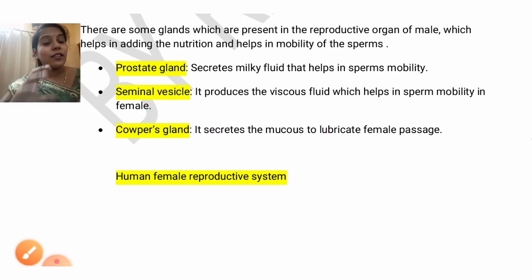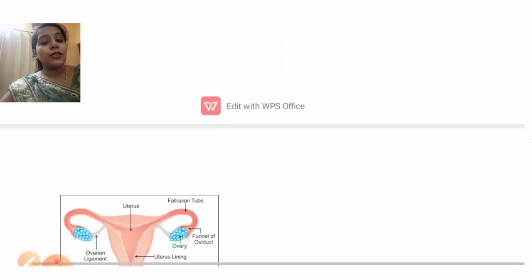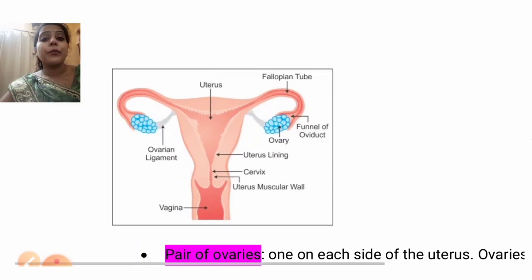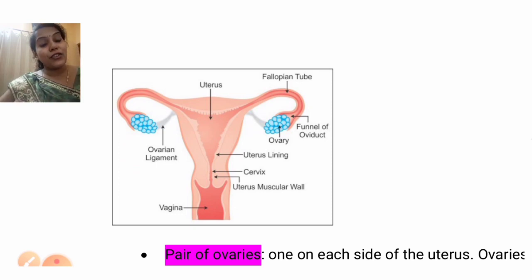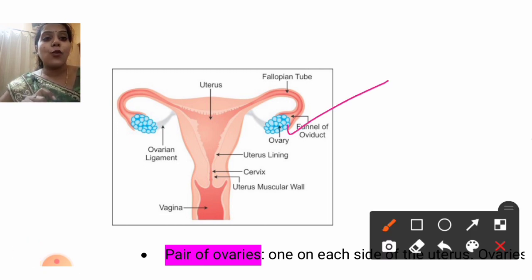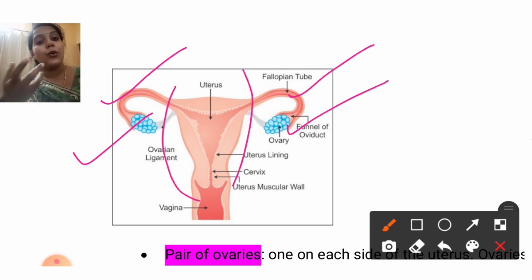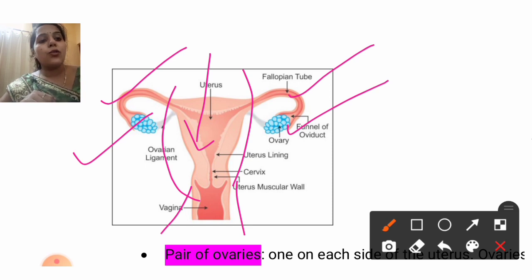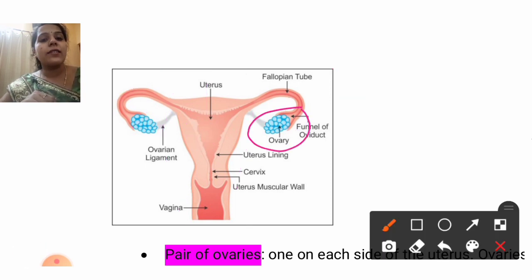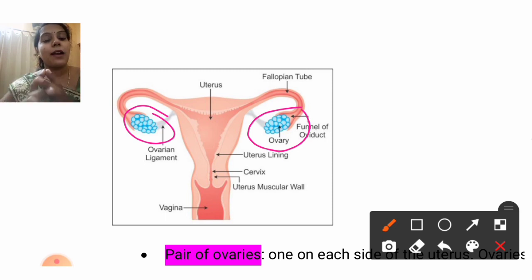I hope you have understood all the functions. Next, coming to the human female reproductive system — it is also very important. Parts and functions you should know. You can observe here: there is a pair of ovaries, one on either side of the uterus, and there is a pair of fallopian tubes, a uterus where the embryo will develop, and a vagina.